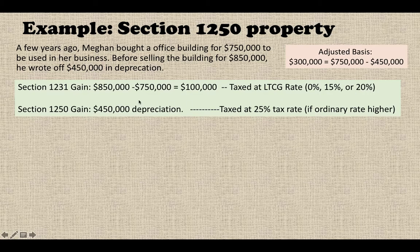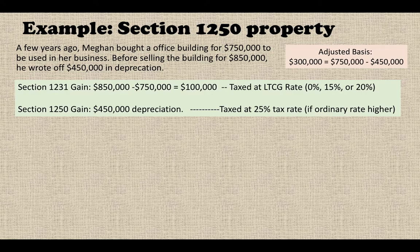For the Section 1250 gains: whenever you sell a depreciable property at a gain, the entire depreciation will be recaptured. Here, the entire recaptured depreciation is the Section 1250 gain — so it's $450,000. This will be taxed at a 25 percent tax rate, because the ordinary income rate would obviously be higher.